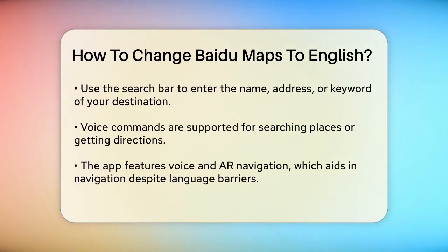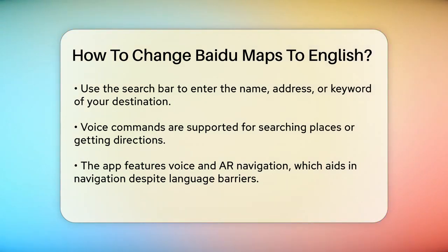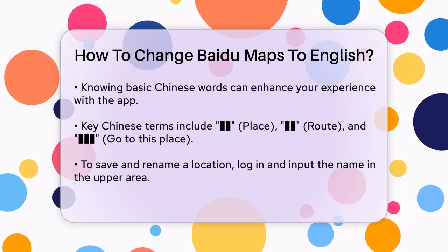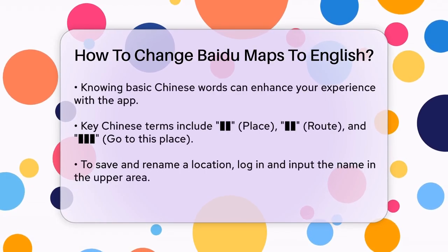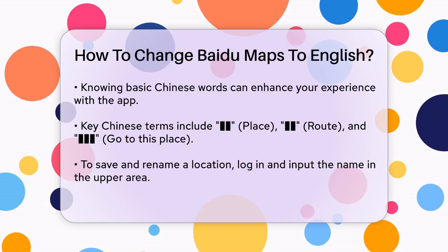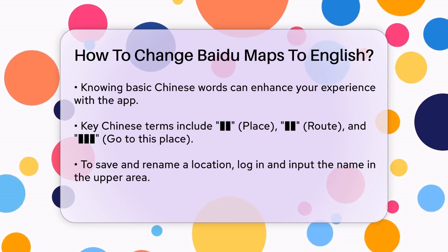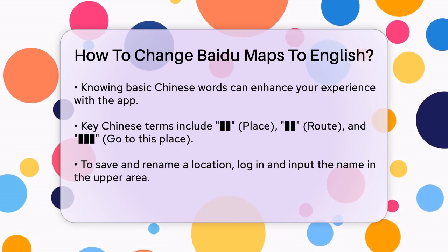To navigate the app in English, you can use the search bar at the top of the screen to type in the name, address, or keyword of your destination. You can also use voice commands to search for places or get directions. The app supports voice and AR navigation, which can be very helpful even if the interface is not fully in English.